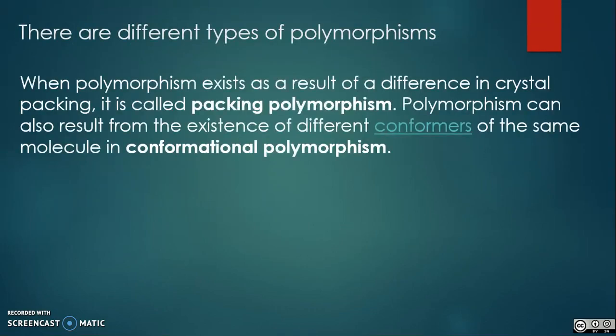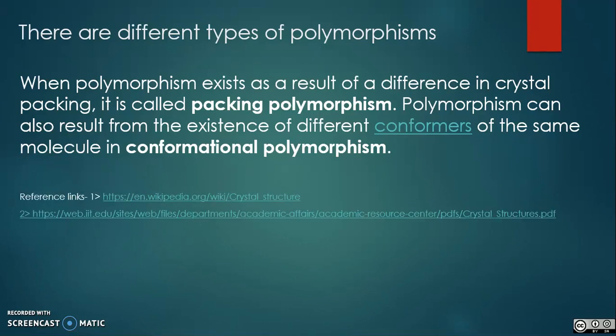There are different types of polymorphism. When polymorphism exists as a result of a difference in crystal packing, it is called packing polymorphism. Polymorphism can also result from the existence of different conformers of the same molecule in conformational polymorphism.